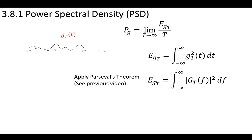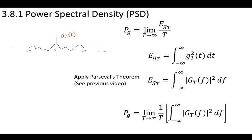Using Parseval's theorem, we can relate this either from the time domain or the frequency domain to find the energy of that truncated signal. Therefore, in the frequency domain, we can define the power of g using the frequency domain components of its truncated signal — we can use the truncated components to define the power in the frequency domain.